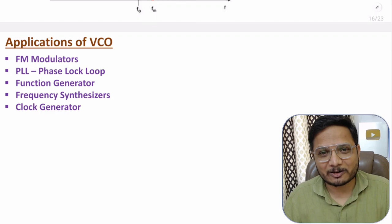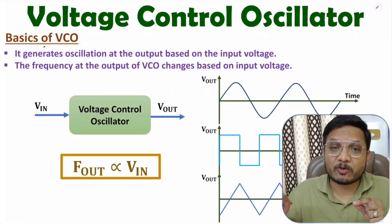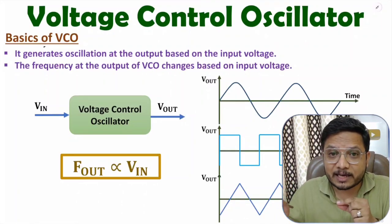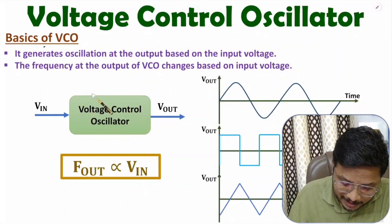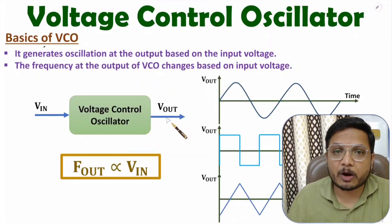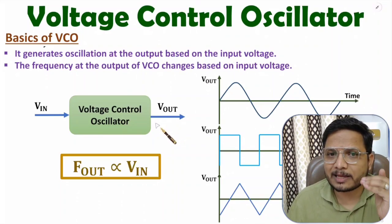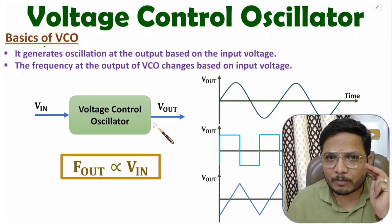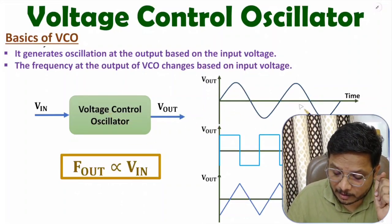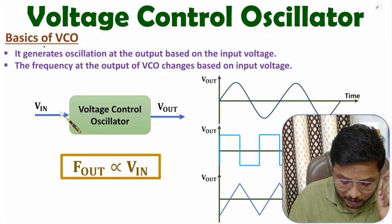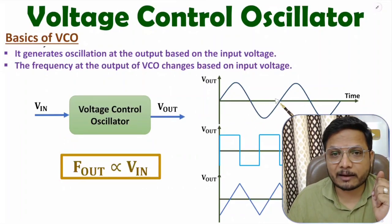A voltage controlled oscillator generates oscillations at the output side, where the oscillation frequency depends on the input signal. We have a VCO in which at the output side we will have oscillations. As you change the input signal, the output frequency will change with VCO.